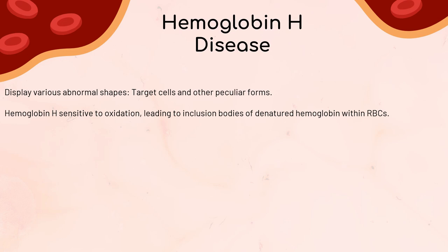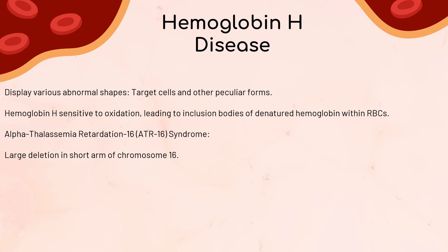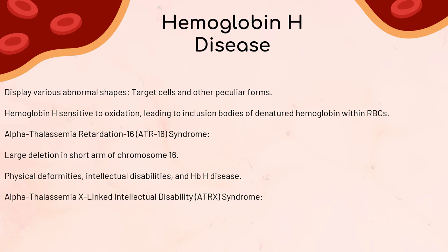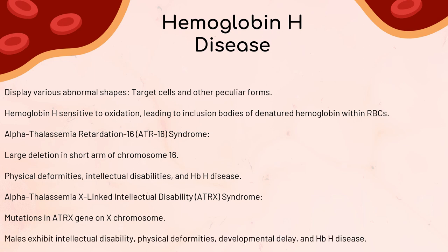Hemoglobin H disease is also linked to two distinct conditions: ATR-16 syndrome and ATRX syndrome. In ATR-16 syndrome, patients inherit or acquire a large deletion in the short arm of chromosome 16, leading to physical deformities, intellectual disabilities, and hemoglobin H disease. ATRX syndrome is caused by mutations in the ATRX gene located on the X chromosome; males affected exhibit significant intellectual disability, physical deformities, developmental delay, and hemoglobin H disease.